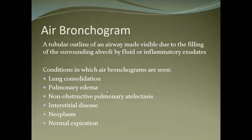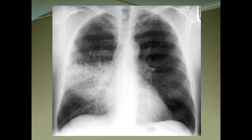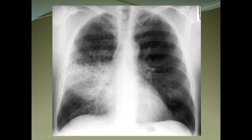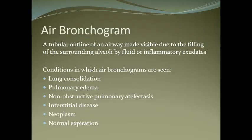Air bronchograms are the linear branching structures seen within a whitish area of consolidation — you can see tiny branching air-filled structures within the white opacity. Air bronchograms are seen in consolidation, pulmonary edema, non-obstructive pulmonary atelectasis, interstitial disease, neoplasm, and normal expiration.